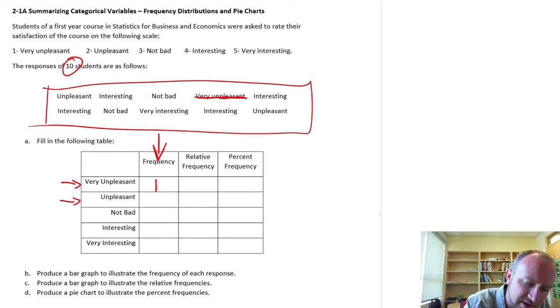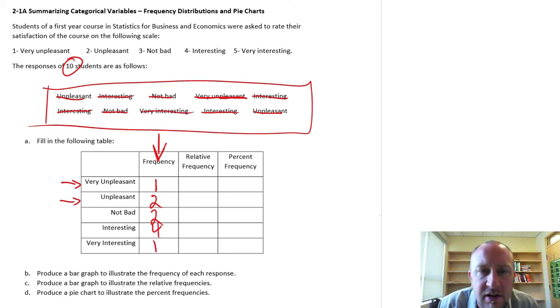Unpleasant - looks like only two students found it to be unpleasant. Not bad - two students. Interesting - one, two, three, and four students found it interesting. And there's that one student who found it to be very interesting. So now we've got our count, we've got our frequency values for each of these responses.